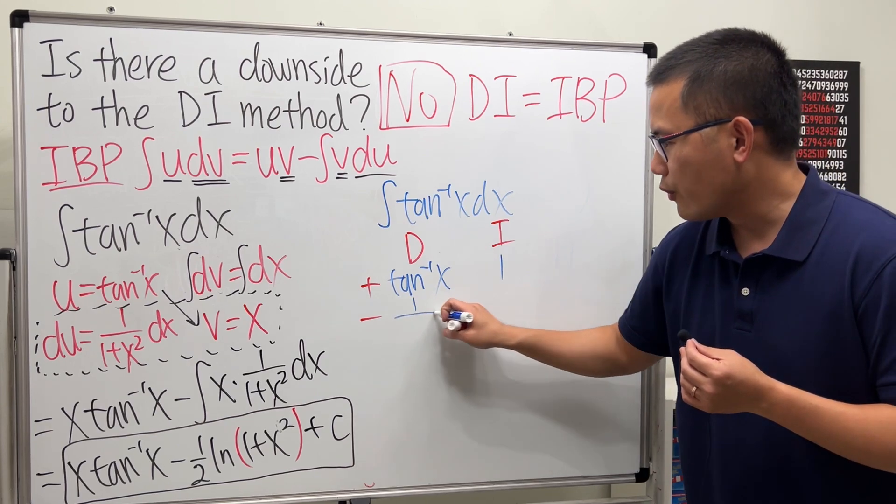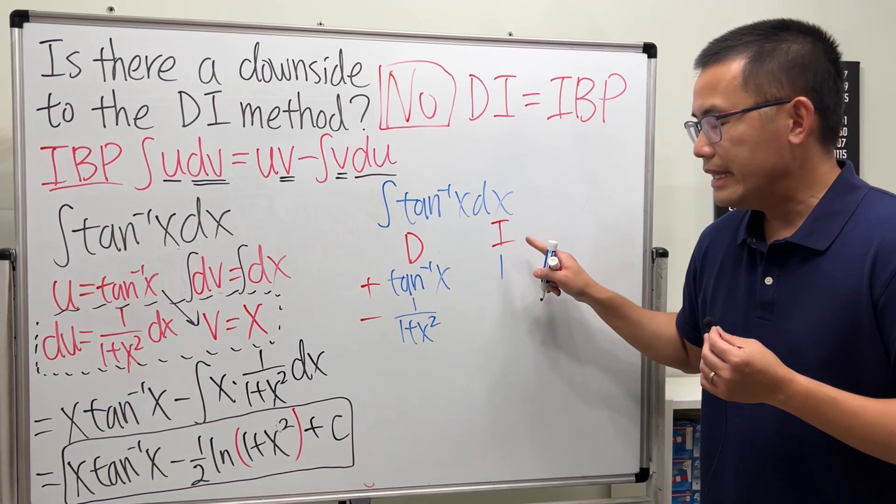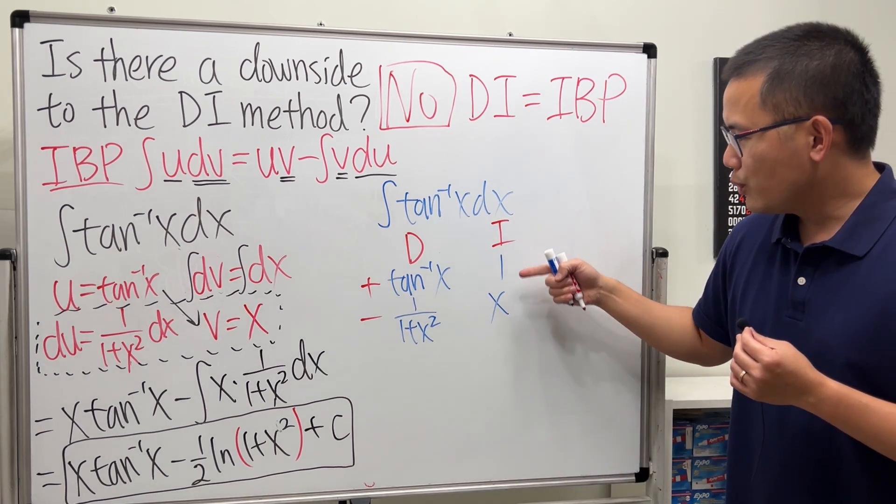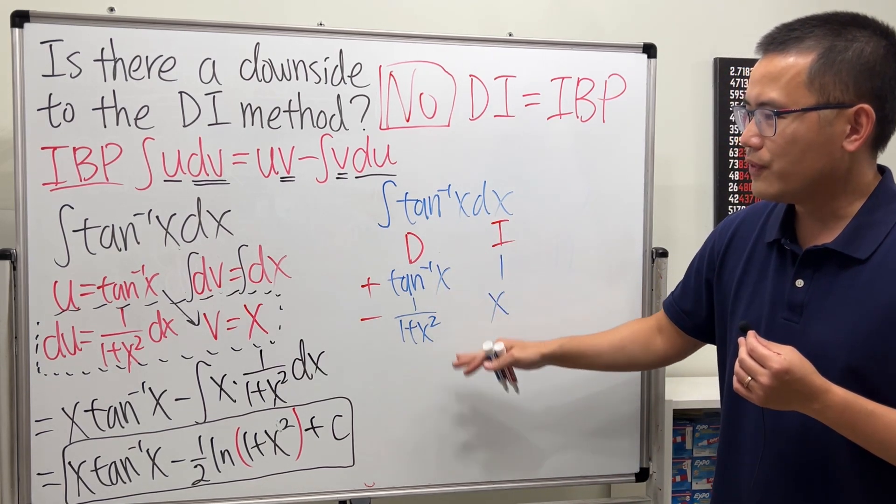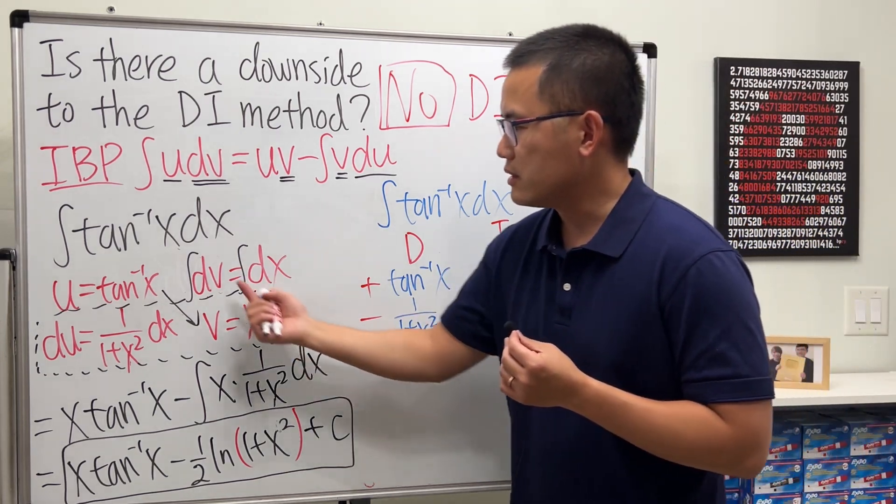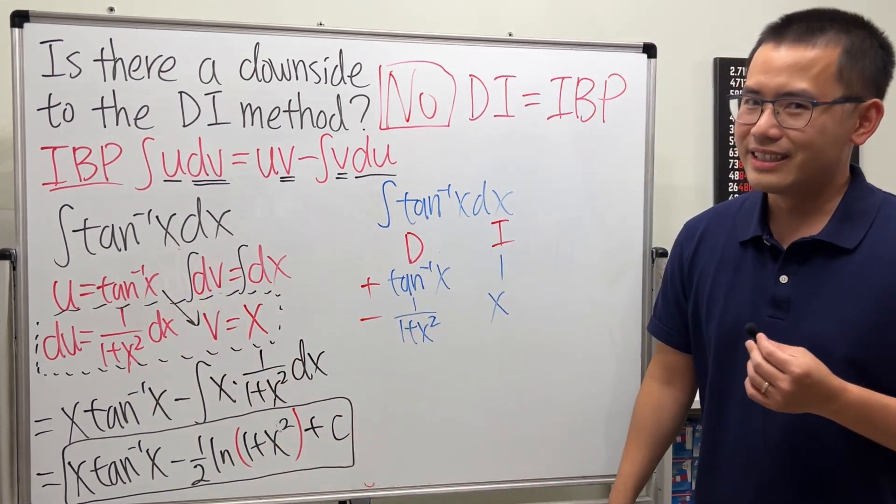And then, differentiate this one time. We get 1 over 1 plus X squared. Integrate this. We get X. It tells you what to do. It's extremely convenient to remind you that what you are supposed to do. And this right here, it's exactly that.